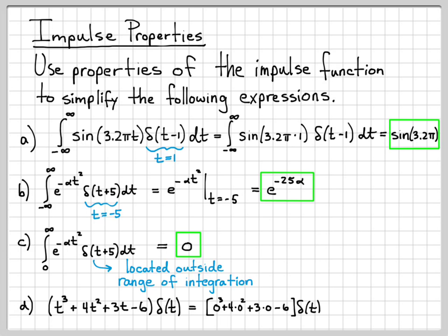0 cubed, 4 times 0 squared, 3 times 0. Those are all 0. And I'm left with just minus 6. So this big old nasty thing simplifies to just -6δ(t).